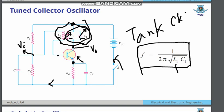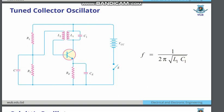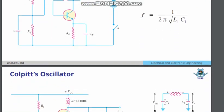The L1 and C1 part is the main tank circuit. This tank circuit determines the main resonance frequency for oscillation. The three things very common in an oscillator are: the tank circuit, the amplification part, and the positive feedback path — those three things are present here.